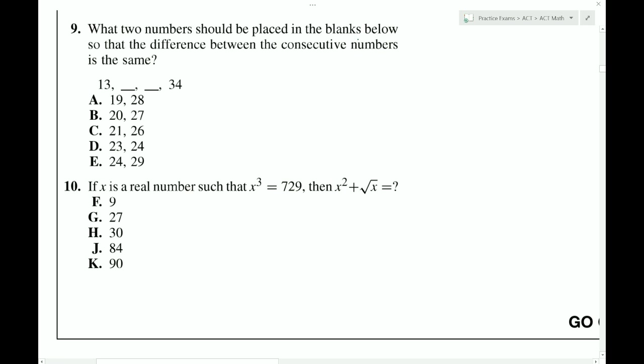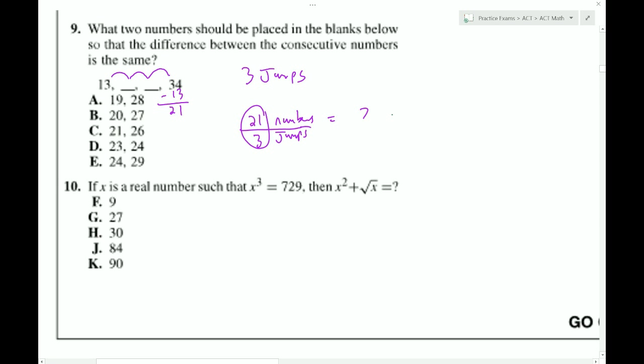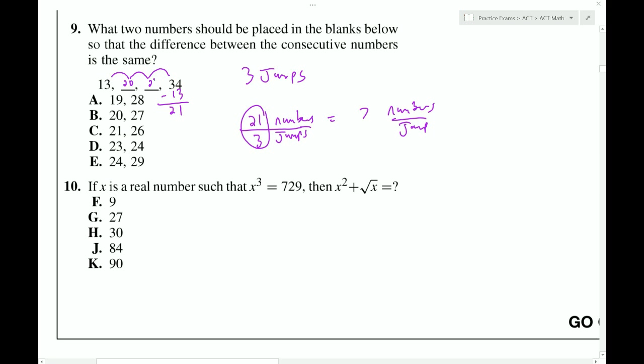What two numbers should be placed in the blanks below so that the difference between the consecutive numbers is the same? So I have to do 1, 2, 3 jumps. And in those 3 jumps, I have to cover a distance that's equal to the difference of these numbers, which happens to be 21. So I have to cover a distance of 21 numbers in 3 jumps. So the question is how many numbers do I go per jump? So I can combine these to get 7. And that's 7 numbers per jump. So that means I need to move the thing by 7. So I add 7 and I get 20. I add another 7 and I get 27. And then another 7 will get me to 34. So this is choice B.